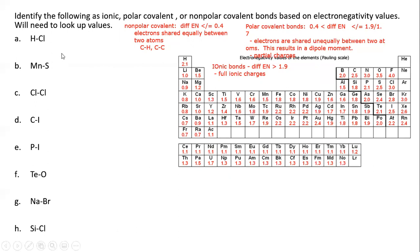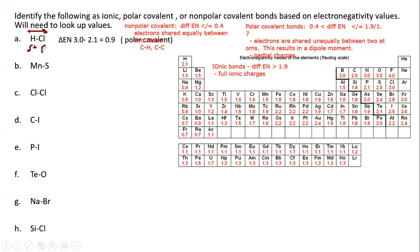For HCl, the electronegativity difference is 3 minus 2.1, which equals 0.9. That means we have a dipole moment: hydrogen is less electronegative and more positive, while chlorine is more negative. So there's a partial positive charge on the hydrogen and a partial negative charge on the chlorine.